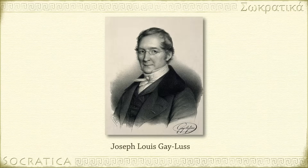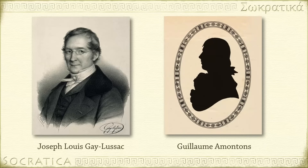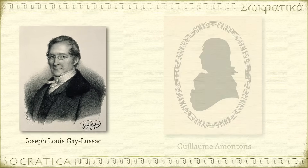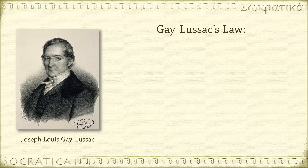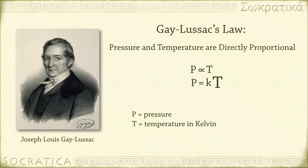Joseph Louis Gay-Lussac shares credit with Guillaume Amontons for establishing a gas law describing the relationship between temperature and pressure. Gay-Lussac's law says that when the volume and amount of gas is constant, pressure and temperature are directly proportional — P is proportional to T. You can write this mathematically as P equals KT, where P equals pressure, T equals temperature in Kelvin, and K is a proportionality constant.